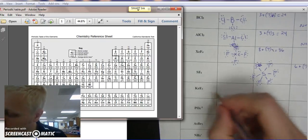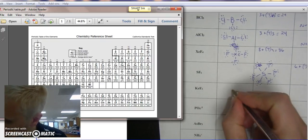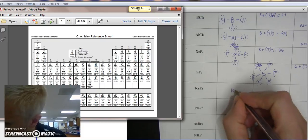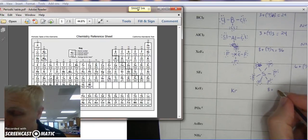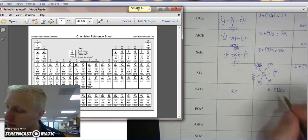All right. Doing another one. KrF2. Kr goes in the center because it's in least supply. It has 8. It's a noble gas, and fluorine is a halogen, so it has 7. There's 2 of them. 7 times 2 is 14, plus 8, equals 22.